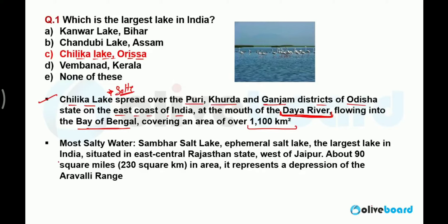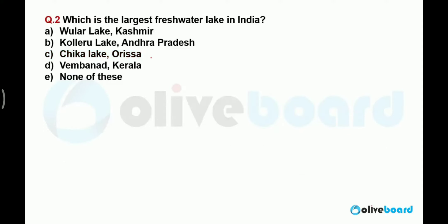Chilka Lake is a salty water lake — it is not a fresh water lake. Sometimes you get the question: which lake in India has the most salty water? The correct answer is Sambhar Lake. Sambhar Lake is the largest salt lake situated in the east-central state of Rajasthan, west of Jaipur, covering an area of 230 square kilometers. It is formed by a depression of the Aravalli Range, meaning it is a natural lake. So remember: largest lake in India is Chilka in Odisha, but the lake with the most salty water is Sambhar Lake in Rajasthan.